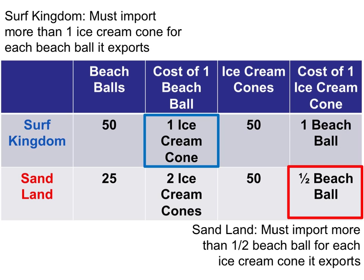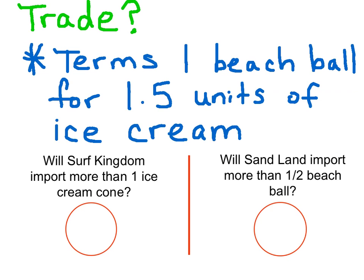In order for these two economies to trade with one another, they both must benefit. Surf Kingdom must receive more than one ice cream cone for every beach ball that it exports, and Sandland wants to import more than half a beach ball for every ice cream cone it exports. Suppose the terms of trade are one beach ball for one and a half units of ice cream. Will this trade occur? Surf Kingdom will receive one and a half units of ice cream for every beach ball it exports — that's more than one, so yes, it's a go. Sandland will receive three-fourths of a beach ball for each ice cream cone it exports — that's more than half, so yes as well.